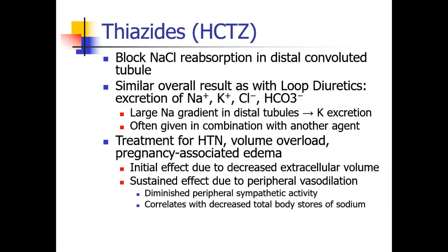Hydrochlorothiazide is often given in combination with another agent, so you may see patients on a combination drug. Thiazides are usually given by mouth and can be used in treatment for hypertension, volume overload, and pregnancy-associated edema. The initial effect when these drugs are started is probably due to decreasing the extracellular volume, but over time patients seem to develop some peripheral vasodilation, which is why it works as a good antihypertensive drug. Patients will diminish their peripheral sympathetic activity, and as total body sodium decreases, this action becomes more pronounced.